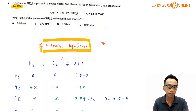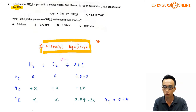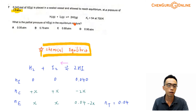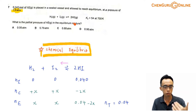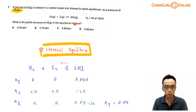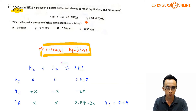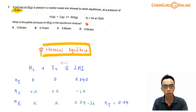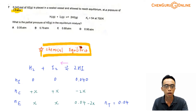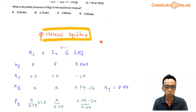The topic tested in this question is chemical equilibrium. We need to fill up the ICE table involving the initial, change, and equilibrium number of moles for this equation, and link it to the partial pressure. Once we can determine the partial pressure, we substitute it into the Kp expression — the equilibrium constant in terms of partial pressure — and solve for the partial pressure of HI.